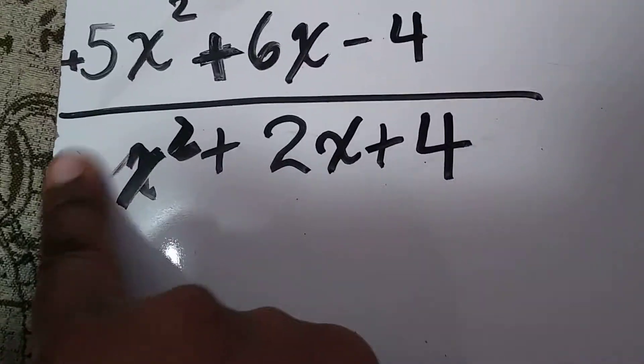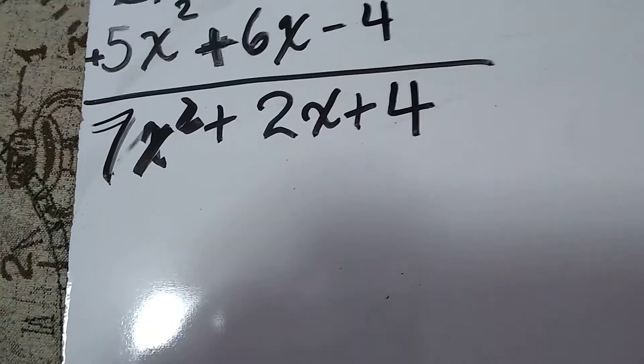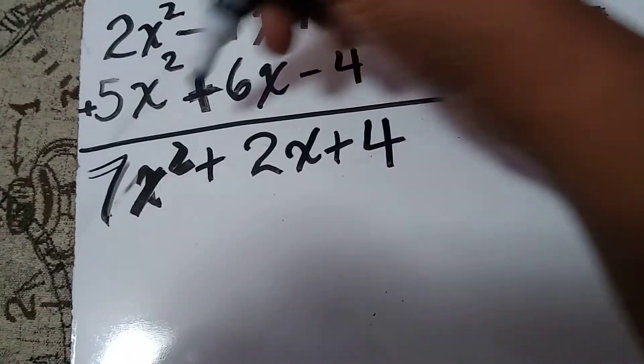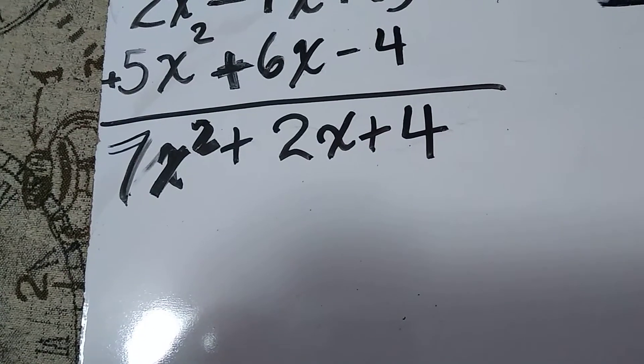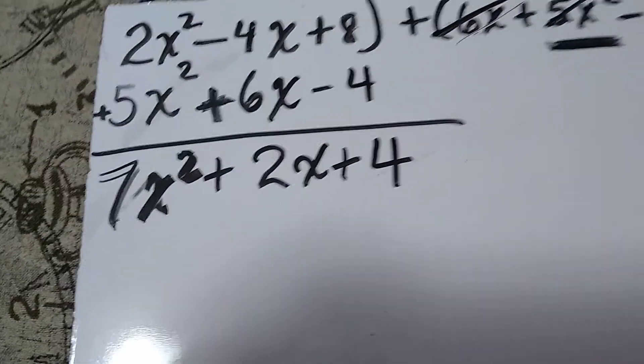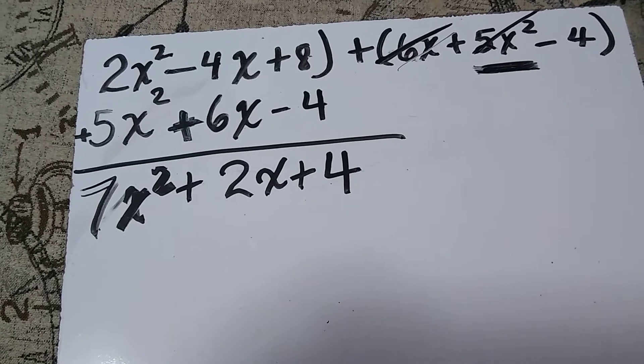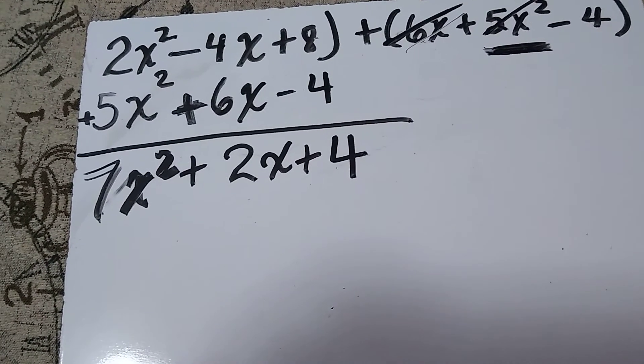Therefore, this doesn't look like a 7, does it? Let me make sure it looks like a 7. All right, so my answer, my solution, is 7x² + 2x + 4, and this is the result from adding polynomials. All right, thank you so much. I'll see you in class.